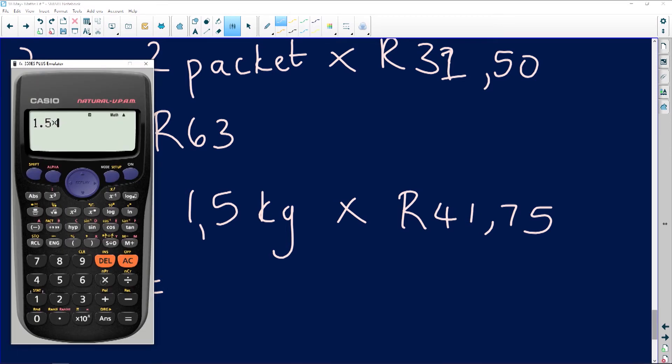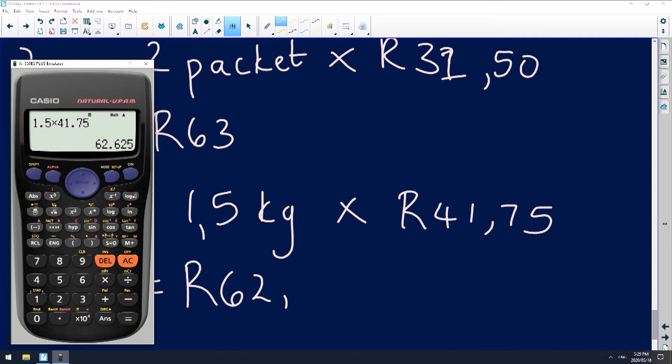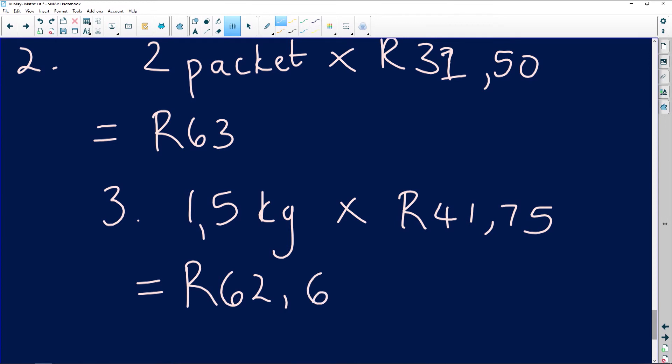1.5 times R41.75 is R62, and remember we're going to be rounding it off to two decimal places because this is money that we are talking about. So it's giving us R62.